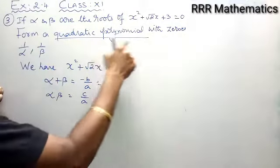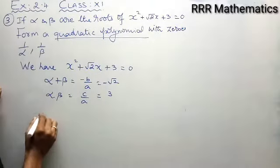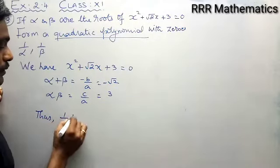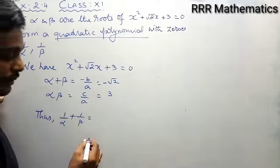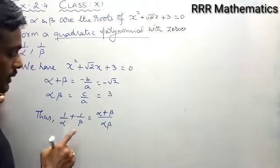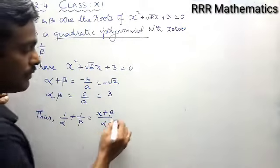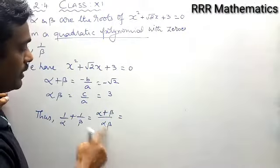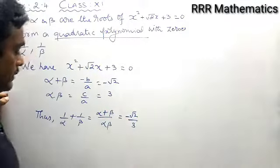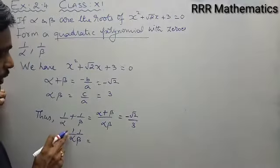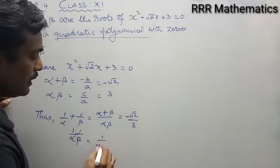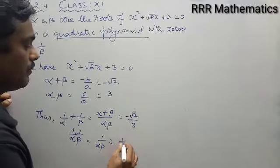You want to form a quadratic polynomial with new zeros. So in this case, sum of the roots will be 1 by alpha plus 1 by beta. When I take LCM, that gives alpha plus beta by alpha beta. What is alpha plus beta? Minus root 2. What is alpha beta? 3. So the new sum = minus root 2 by 3. Product of the roots = 1 by alpha into 1 by beta, which is 1 by alpha beta. What is alpha beta? 3. So the new product = 1 by 3.